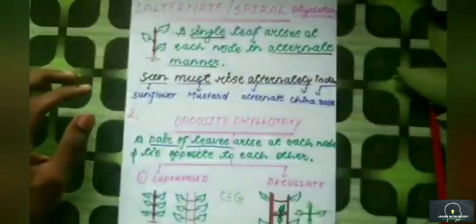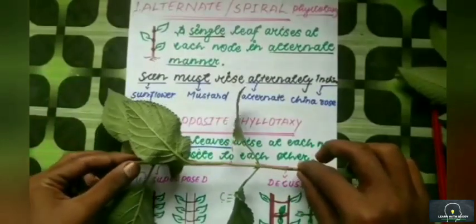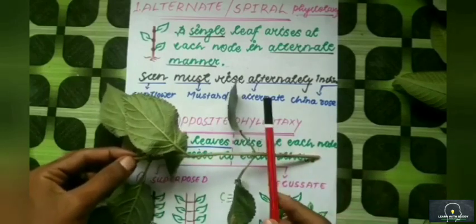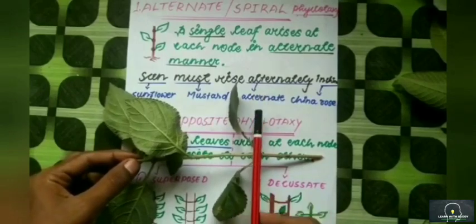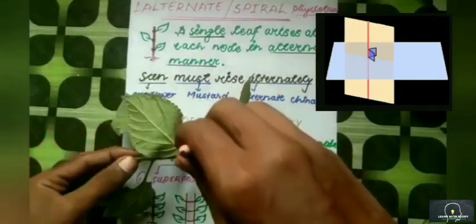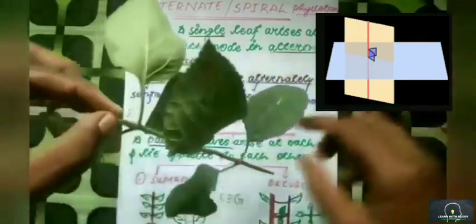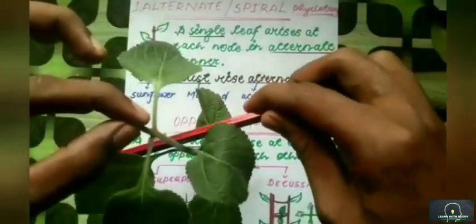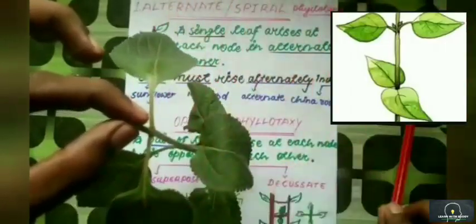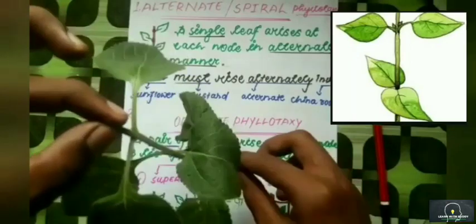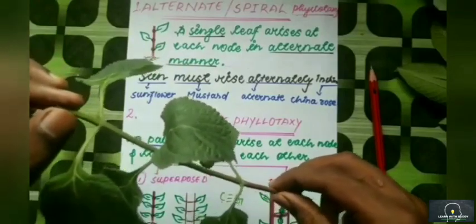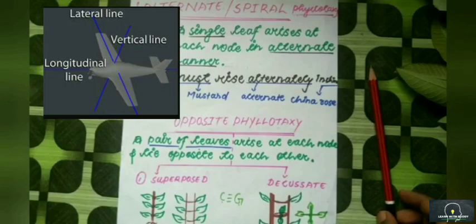Now let's learn decussate phyllotaxy. In decussate phyllotaxy, a pair of leaves also arises at a node and lies opposite each other. But if you see the consecutive nodes, if at one node the leaves are in the horizontal plane, then at the next node they are in the perpendicular plane. So the arrangement of leaves at consecutive nodes is perpendicular — basically they form an X-like structure.